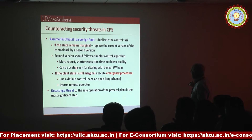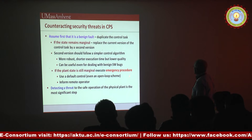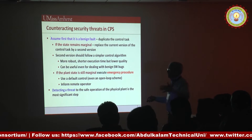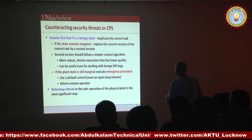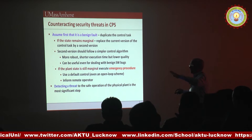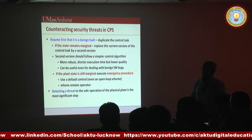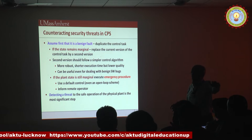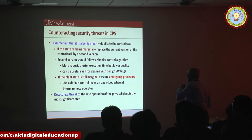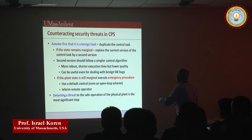Even after this second step, if the plant state is still marginal, we will execute emergency procedures unique to each cyber-physical system. For example, we can use a default control or even open-loop operation: if you are an airplane and you detect a malicious fault, don't start going down or up — stay at the same elevation until the pilot takes control and hopefully manages to handle the situation. Obviously, we will inform a local or remote operator that we are in trouble. The most important part is detecting a threat to begin with.